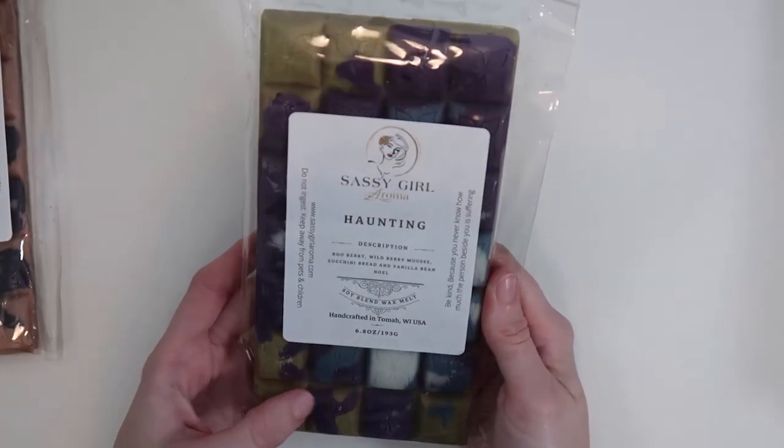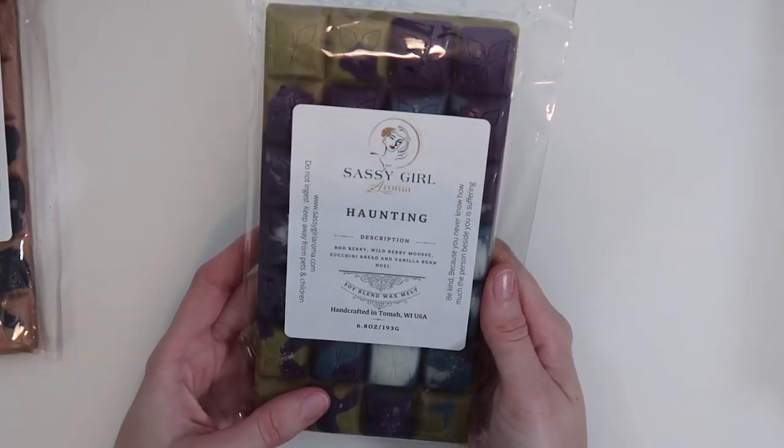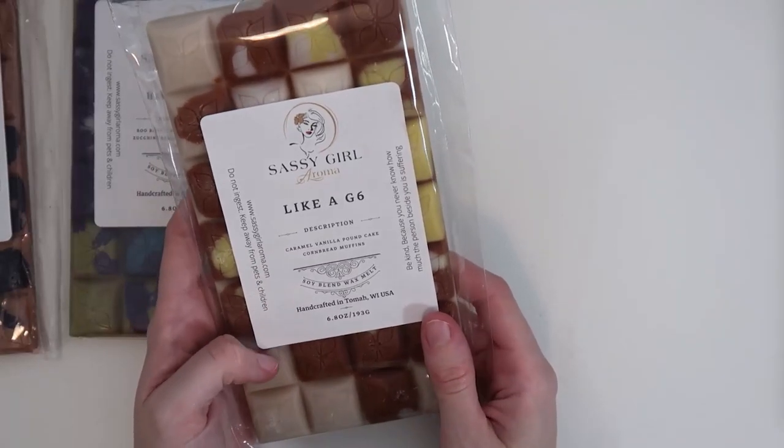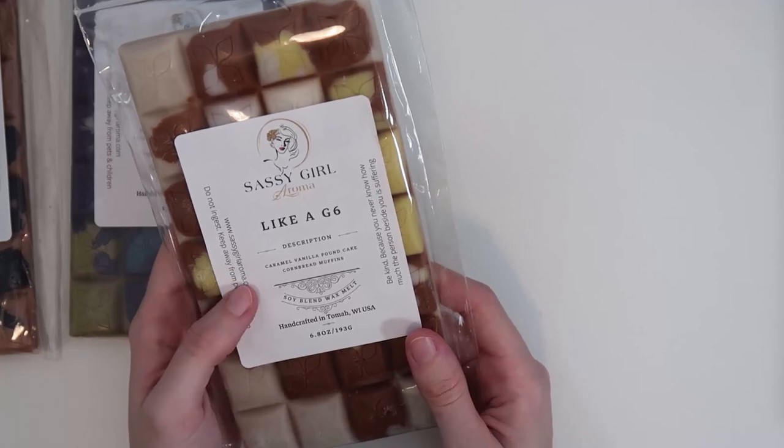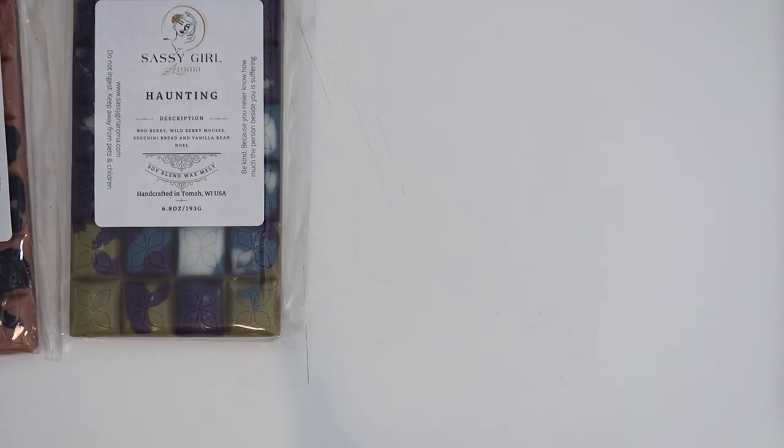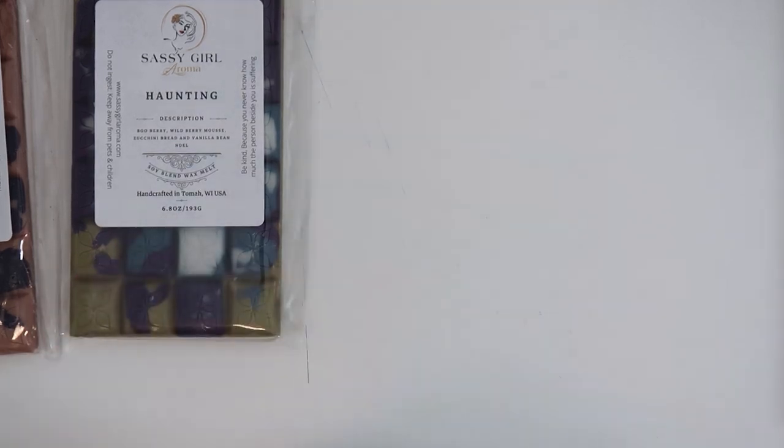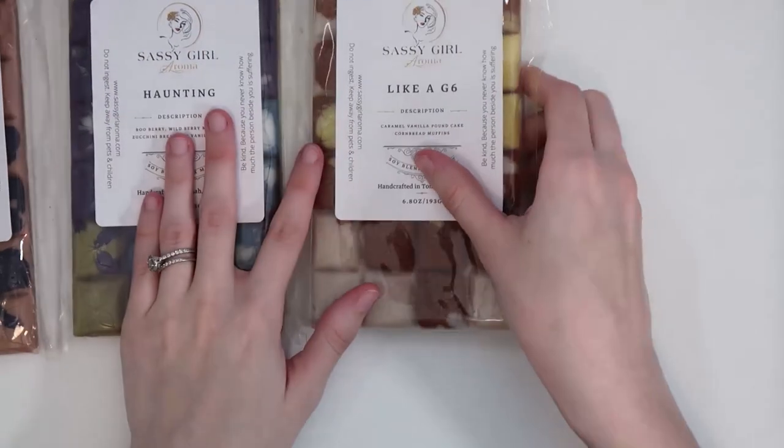We have Haunting. I love the colors in this. This is Boo Berry, Wild Berry Mousse, Zucchini Bread, and Vanilla Bean Noel. Huge fan of the Boo Berry fragrance oil. And this is so good. This is a very berry zucchini bread. Hint of Vanilla Bean Noel. I would definitely consider purchasing this in a loaf. That is fantastic. This one I've seen for a really long time. It's like a G6. I freaking love that song. This is Caramel Vanilla Pound Cake Cornbread Muffins. I just love bakery. I just love cornbread. That is so delicious.